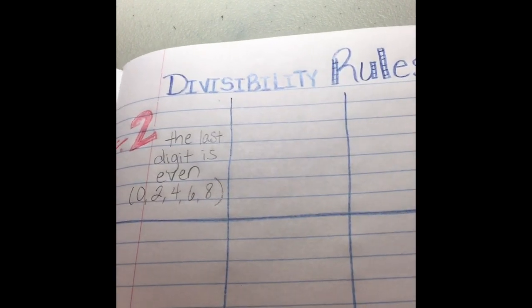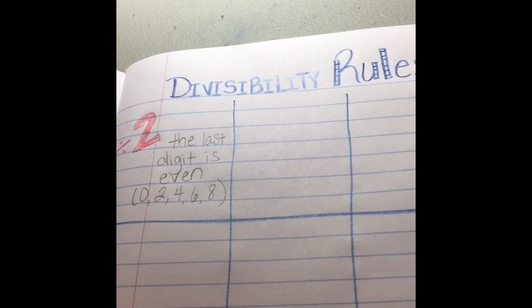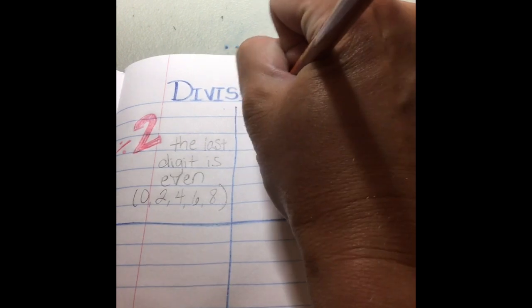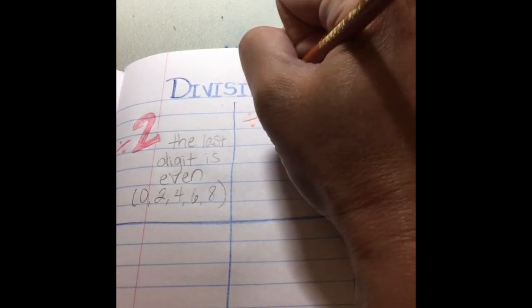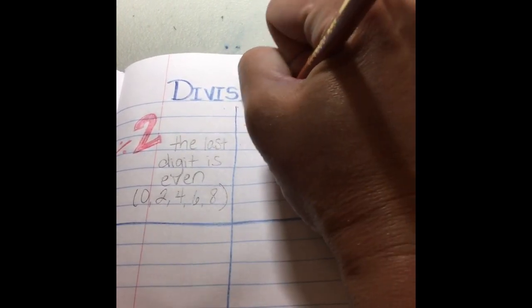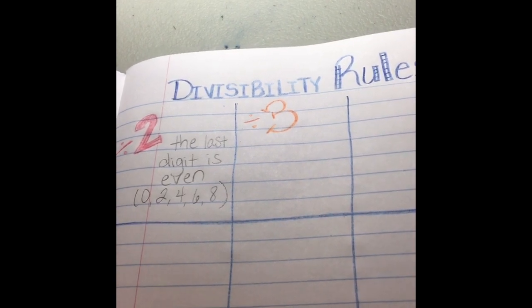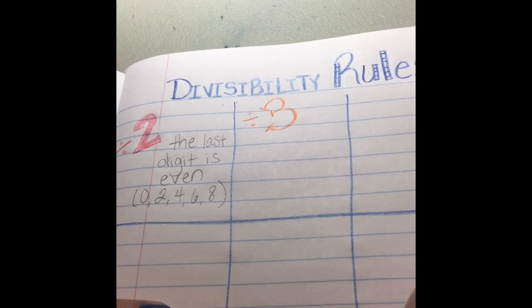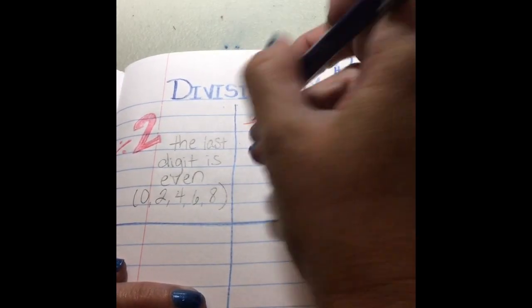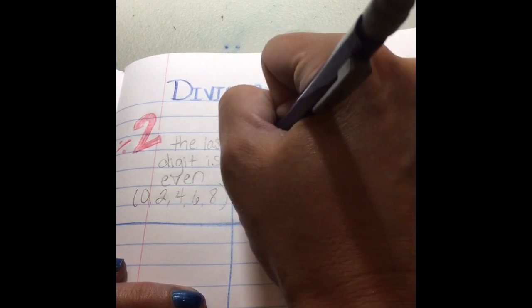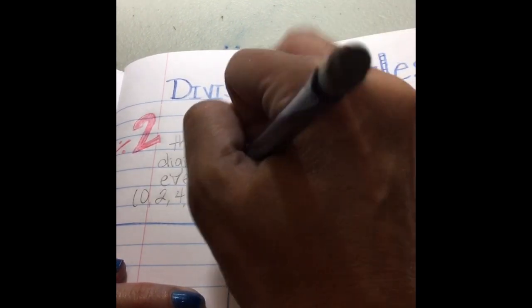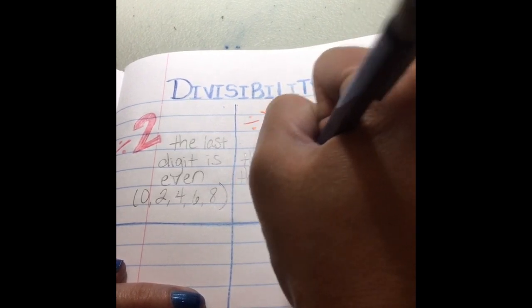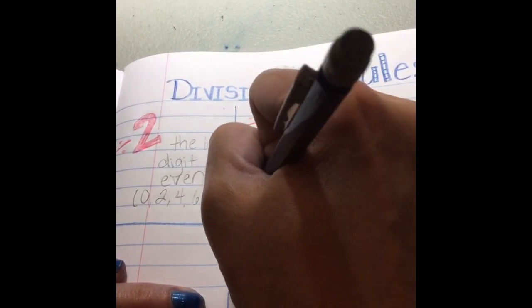And now I'm going to do by three. Divide by three. And I think it's fun to make the different numbers look different, so that's what I'm going to be doing. A number is divisible by three if the sum of the digits is divisible.